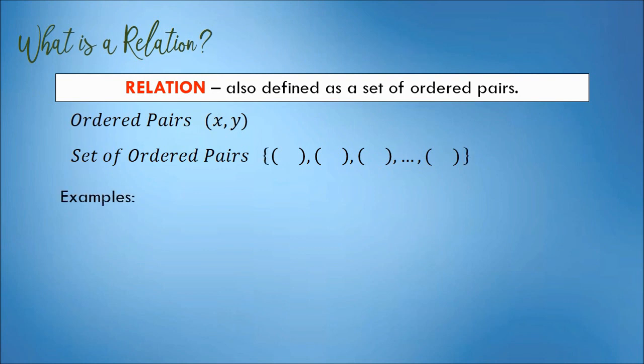For example, we have a set of ordered pairs A. A is equal to: 1 comma 2, 2 comma 2, 3 comma 5, and 4 comma 5, separated by commas, enclosed in a pair of braces. The set represents or shows a relation.